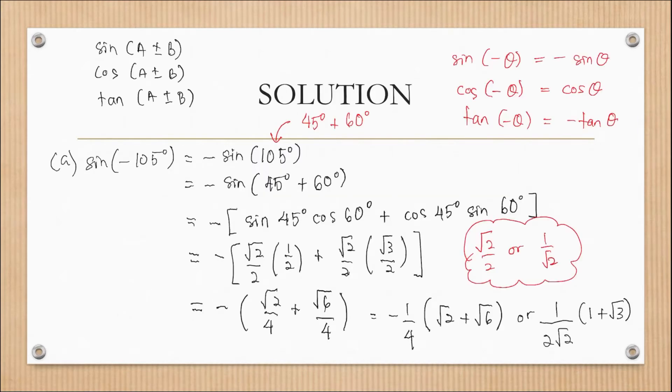Next question is B: tan(7π/12). So we are going to use compound angle tan(A+B). So tan(7π/12), what can you decide for the special angles in the bracket A plus B?